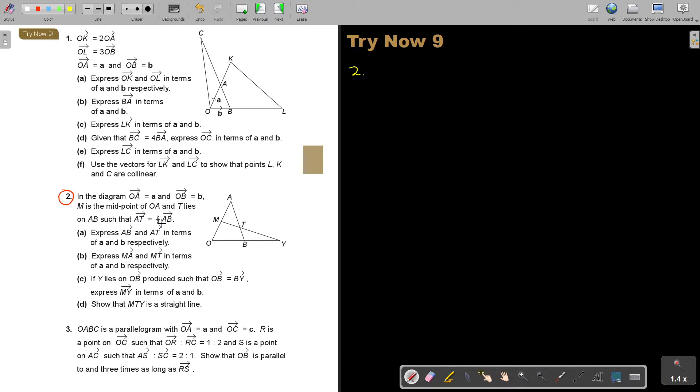Number 2. So in the diagram, OA is equal to a. So that is a. OB is equal to b. And M is the midpoint of OA. So that means that 2 are equal. Midpoint of OA. And T lies on AB. T lies on AB such that AT equals 2 thirds. So that means if this one, you can just write it here, if this is 2 and this is 1, so it's 2 thirds. Just keep that in mind.